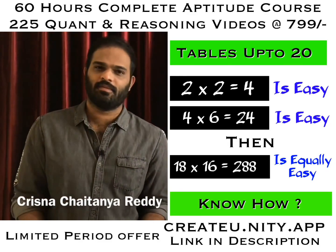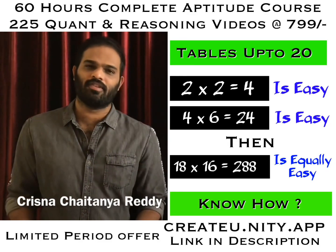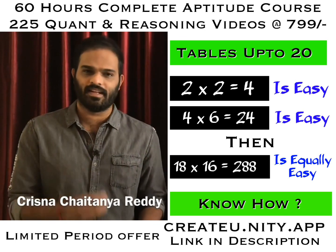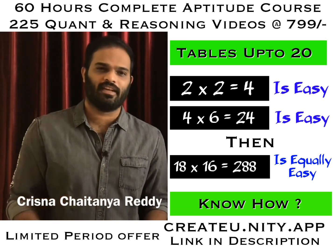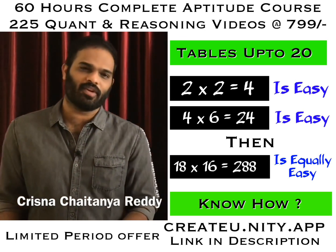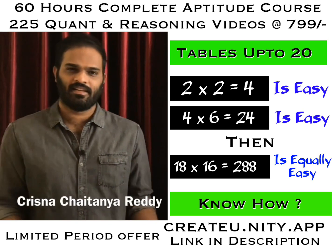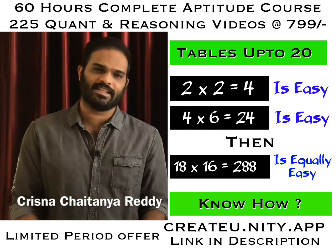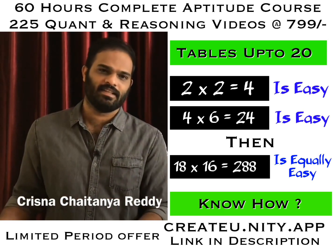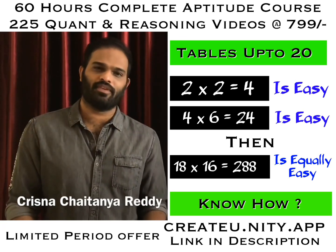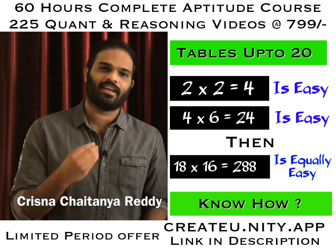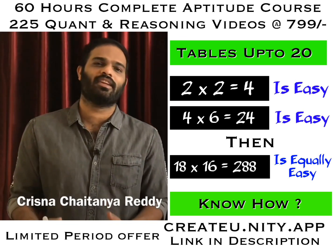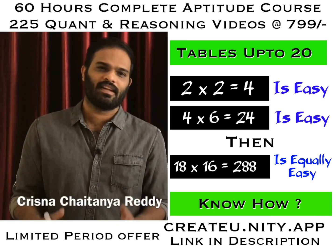Let us learn tables now. Tables are very important because we have a lot of calculations, and that's the reason people repeatedly tell us to learn tables till 20. We feel it is easy because we already know till 10 — in school we have already learned till 10. If somebody asks us what is 9 into 7 we say it is 63. When somebody asks us what is 8 fours we say 32. So we are very quick in tables till 10, and some of us are very quick in tables till 12.